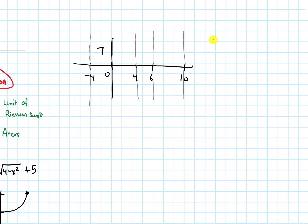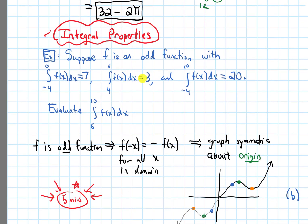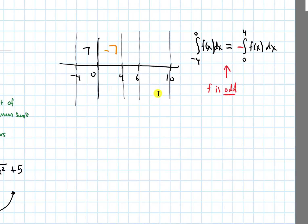The integral from negative 4 to 0 of f(x) dx equals 7. Comparing that to the integral from 0 to 4 of f(x) dx — because f is an odd function, our graph is symmetric about the origin, so these two areas are going to be exactly opposite. That means the area from 0 to 4 is going to be negative 7. And the integral from 4 to 6 was given to us as 3, so I'll label that as 3.